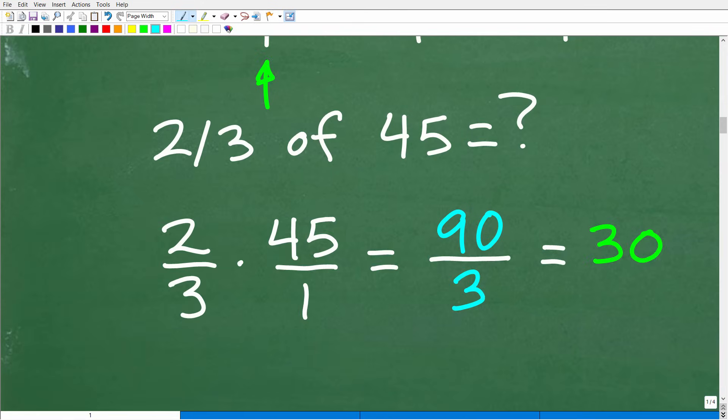All right. So let's go ahead and do that right now. So two-thirds times 45 or 45 over 1, because we are dealing with fractions. We multiply fractions by simply multiplying the respective numerators and denominators. So two times 45 is 90. Three times 1 is 3. 90 divided by 3 is 30.